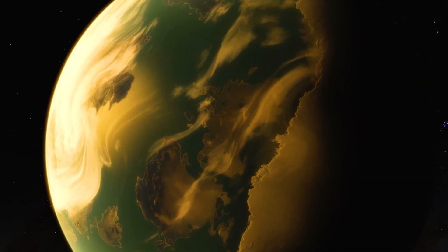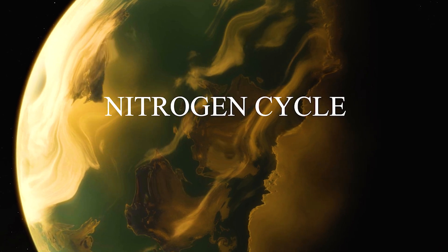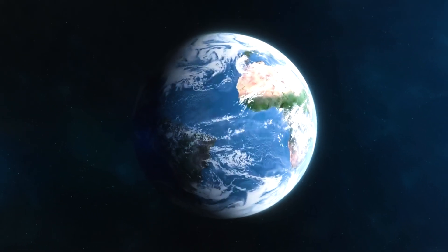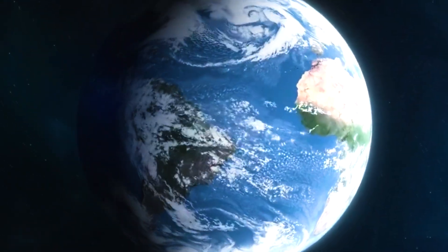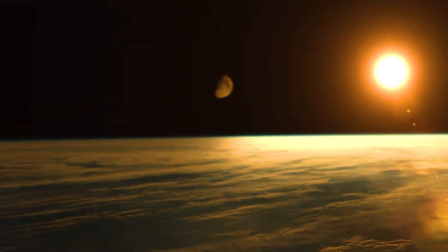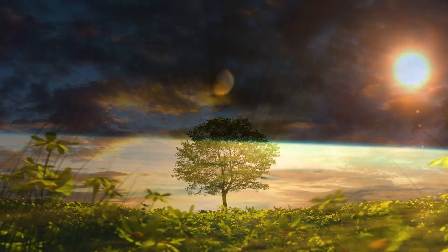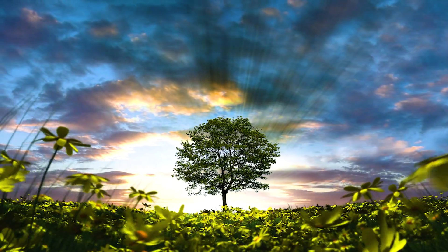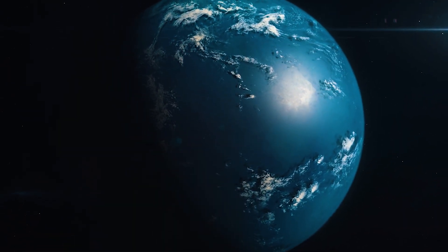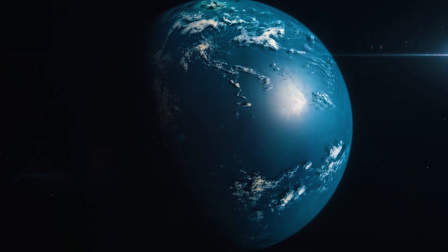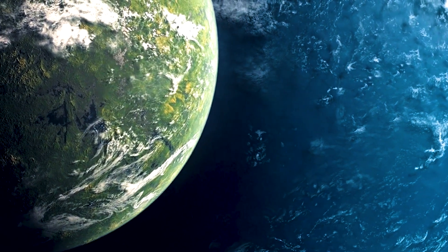But what makes KOI 5554.01 even more alluring is the discovery of the nitrogen cycle, a crucial aspect of our own planet's ecosystem that was found to be present on this alien world. The nitrogen cycle is an essential process that helps keep our Earth's atmosphere clean and enables plants and trees to thrive. This discovery on KOI 5554.01 indicates that the planet may have a similar ecosystem to Earth, which increases the chances of finding new forms of life.